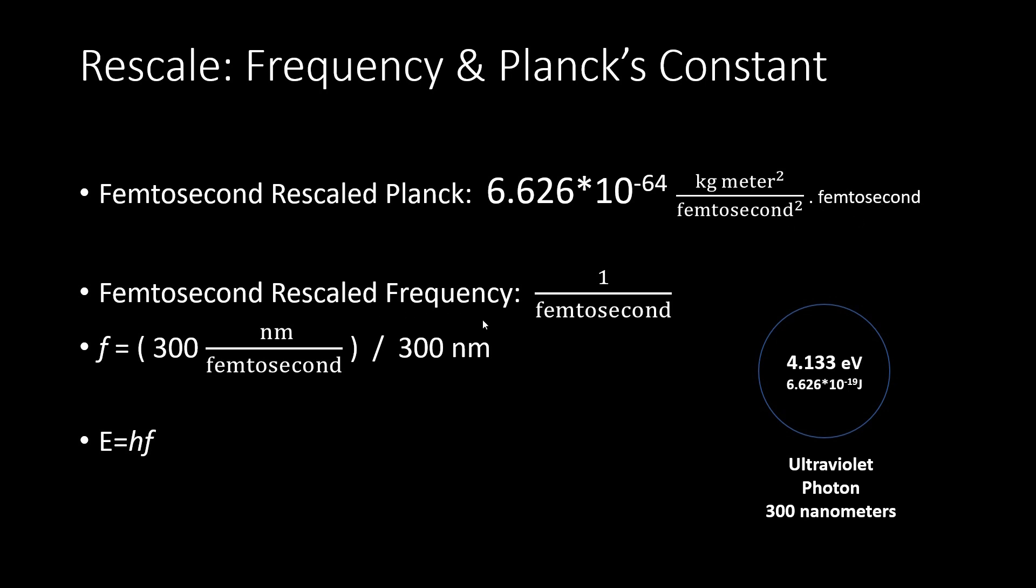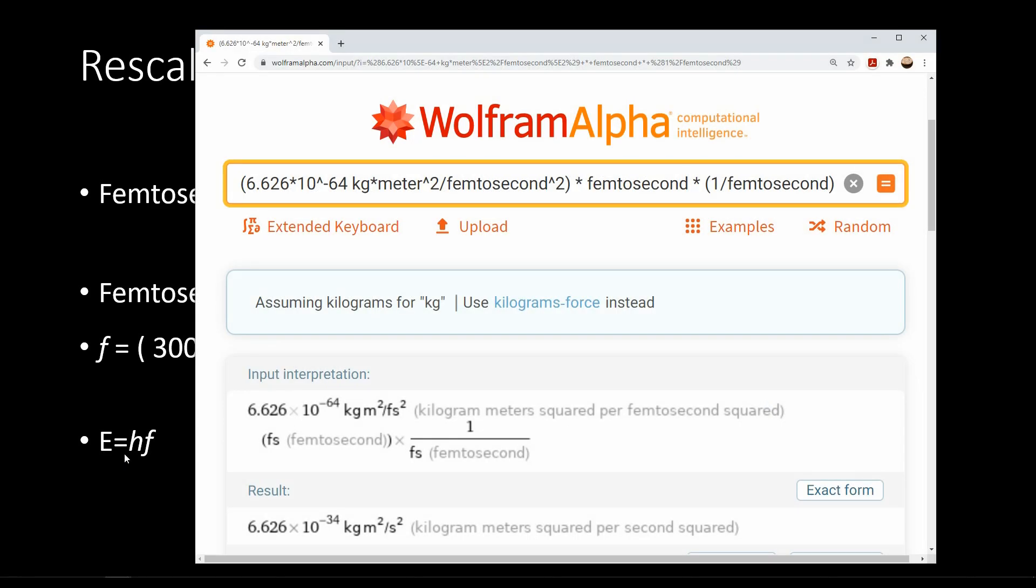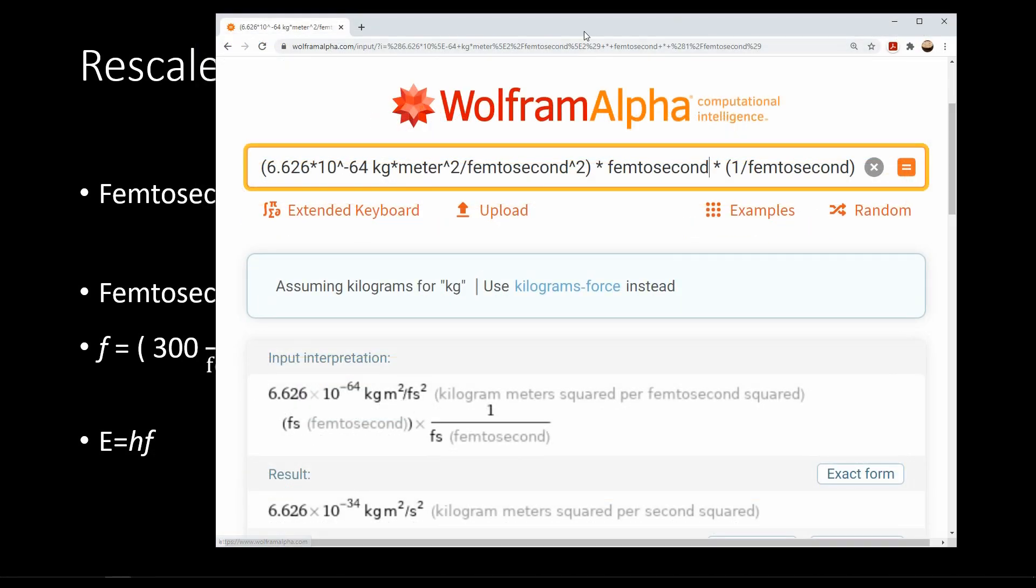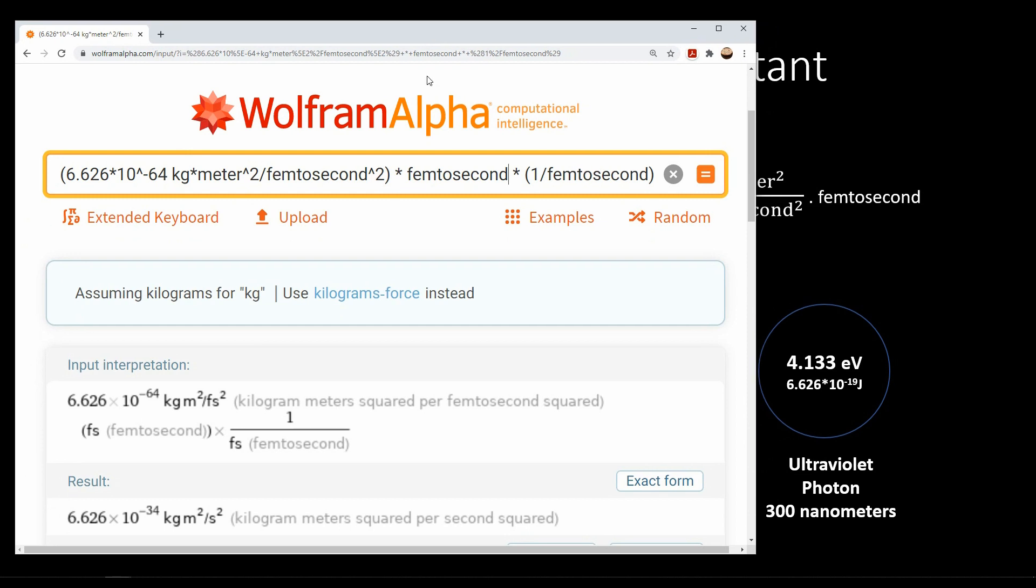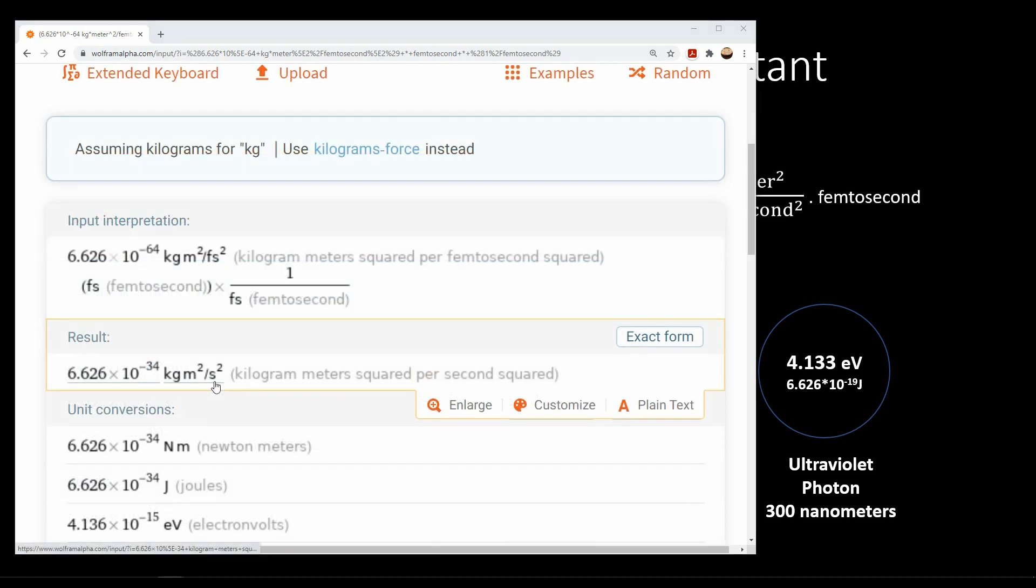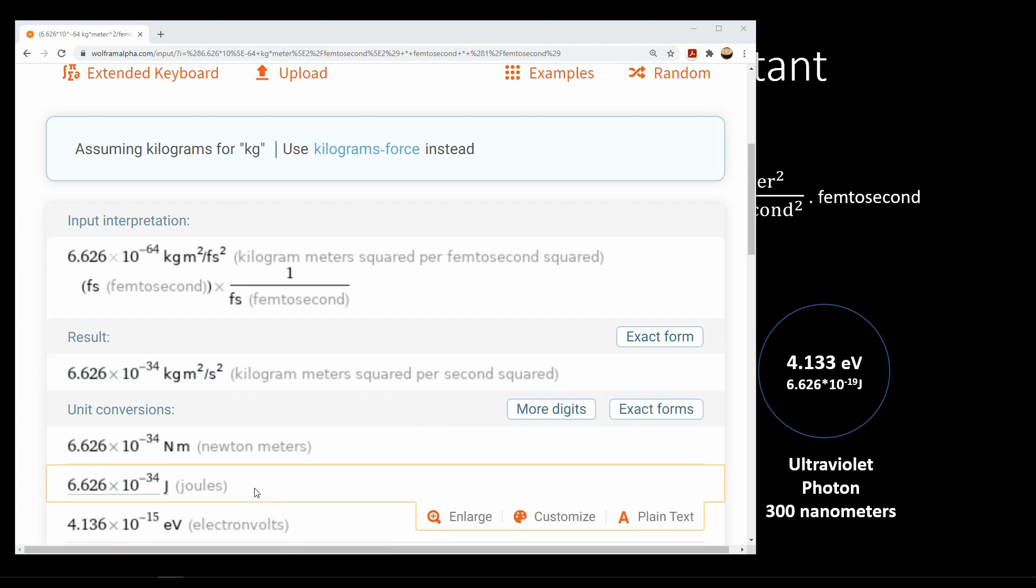And frequency is really easy because it is one cycle per femtosecond, and that is equivalent to 300 nanometer wavelength. So let's calculate this using the rescaled frequency and Planck's constant. So here is E equals hf when it is scaled to the femtosecond. And you can see that the energy of this femtosecond is nowhere near what it needs to be in order to have the energy of an ultraviolet photon. When this is scaled back to the second, you can see that this 300 nanometer cycle has the equivalent energy of Planck's constant.